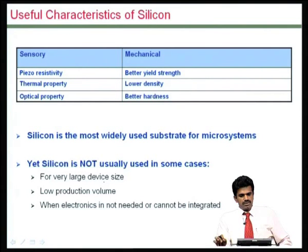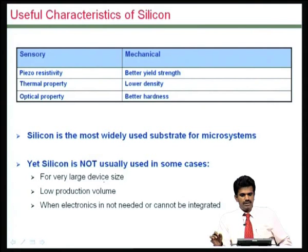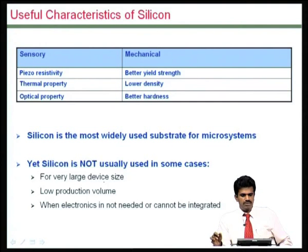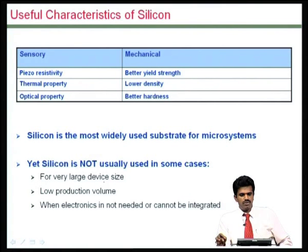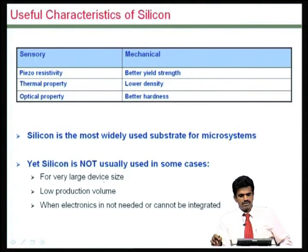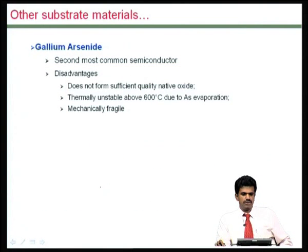Yet silicon is not the only material. There are instances when you really need to build a large area device and silicon is probably not the best suited material. There are also cases where production volume is not large enough to justify the process steps involved, and cases where microsystems need not be integrated on chip. In such cases, non-silicon materials could be used for building microsystems.